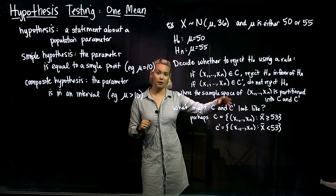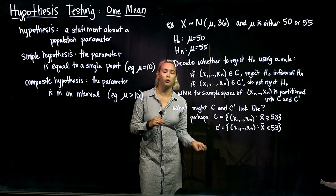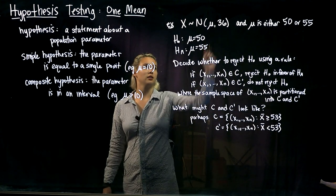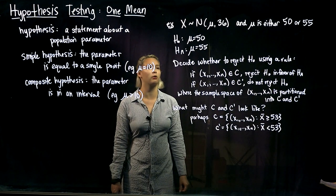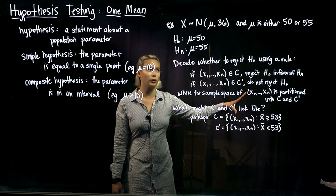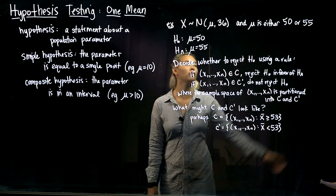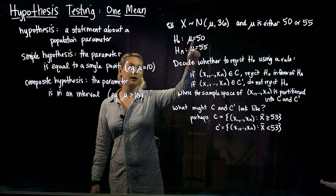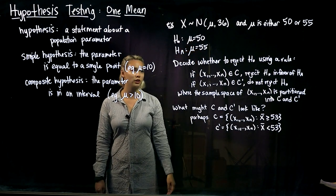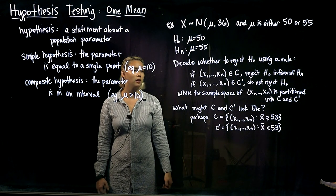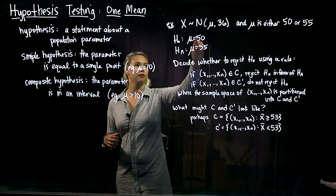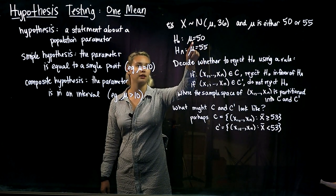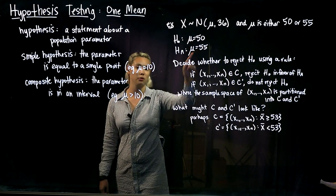In this first example, we're going to think about just two simple hypotheses. We have a normal distribution with unknown mean mu and variance 36, so sigma squared equals 36. Perhaps someone told us that mu equals either 50 or 55. So we set up our null hypothesis as mu equals 50 and the alternative as mu equals 55. We have reason to believe mu equals 50, but if we have enough evidence, we'll reject the null in favor of the alternative that mu equals 55.